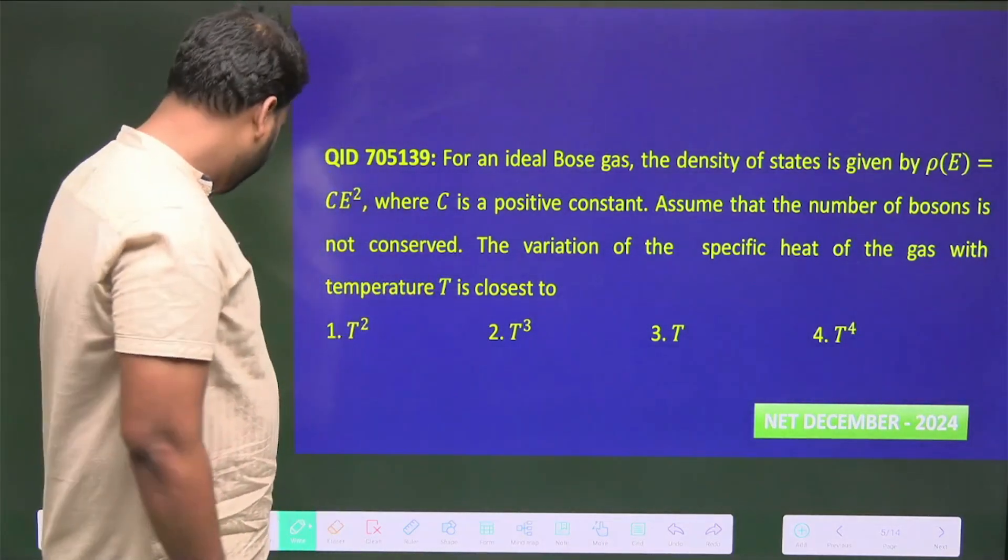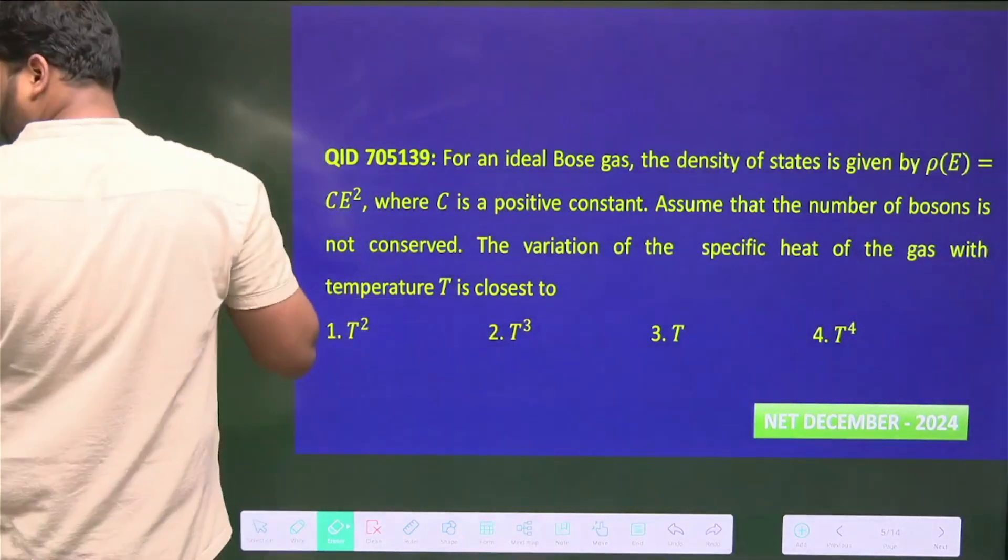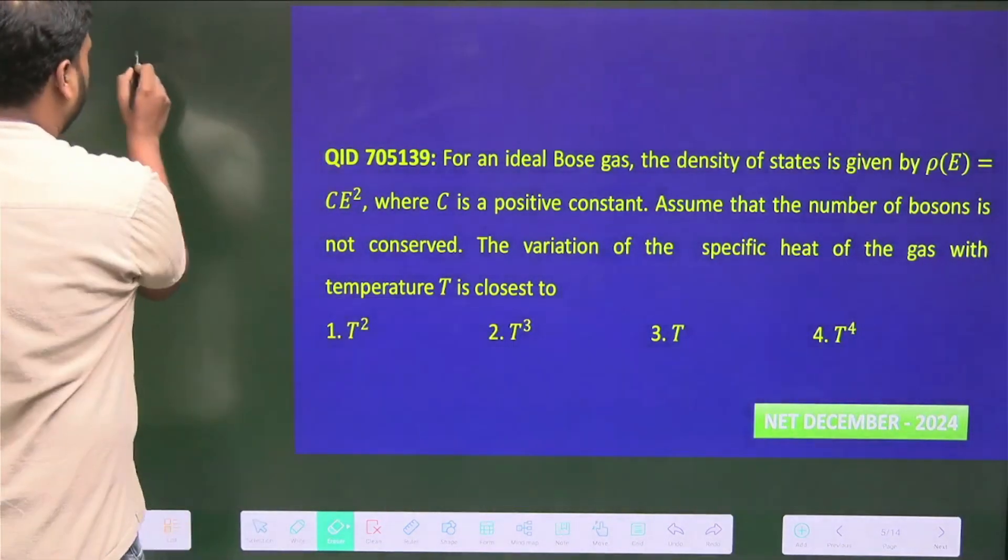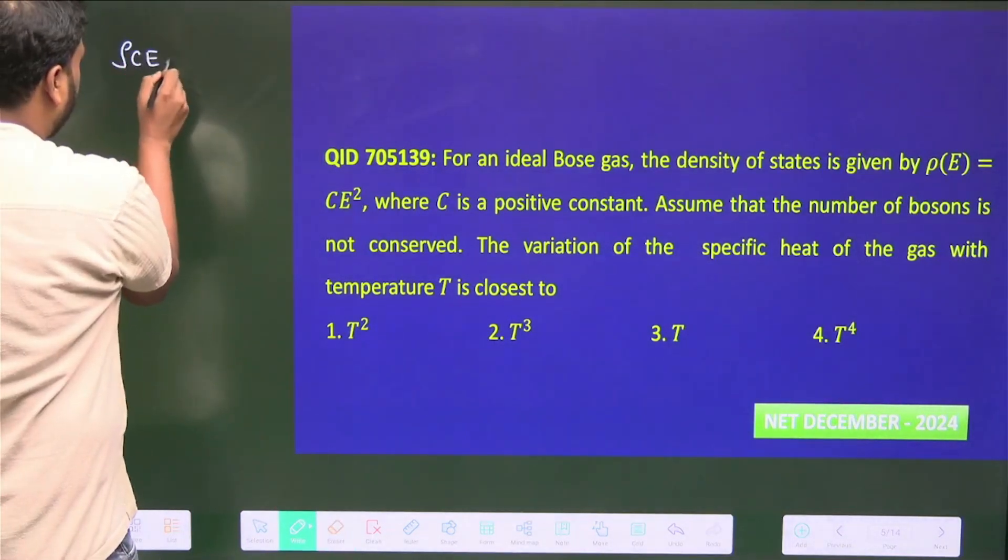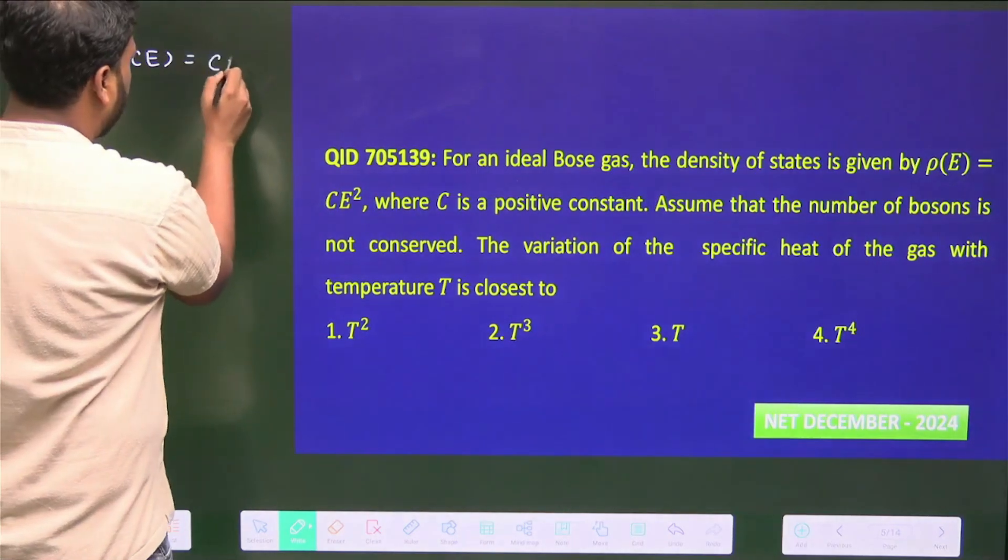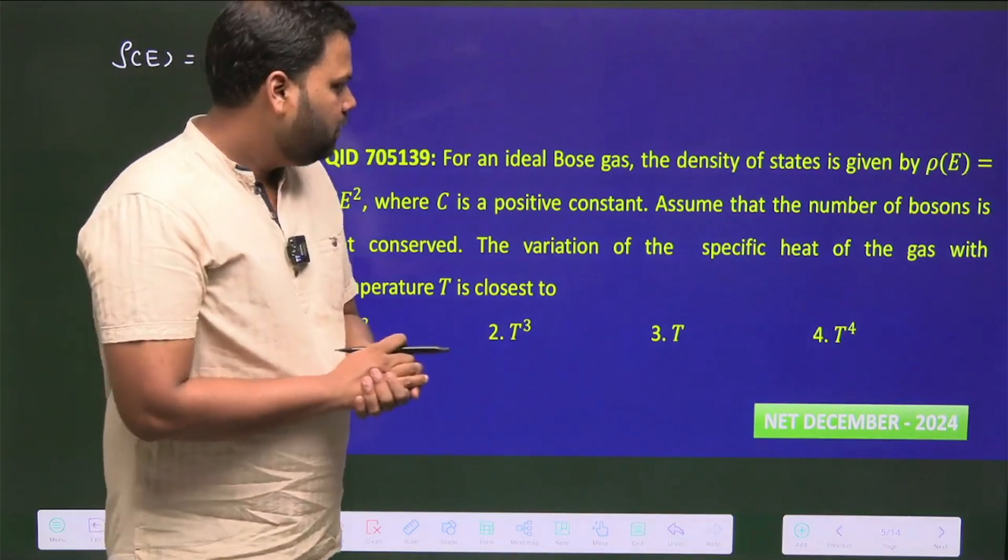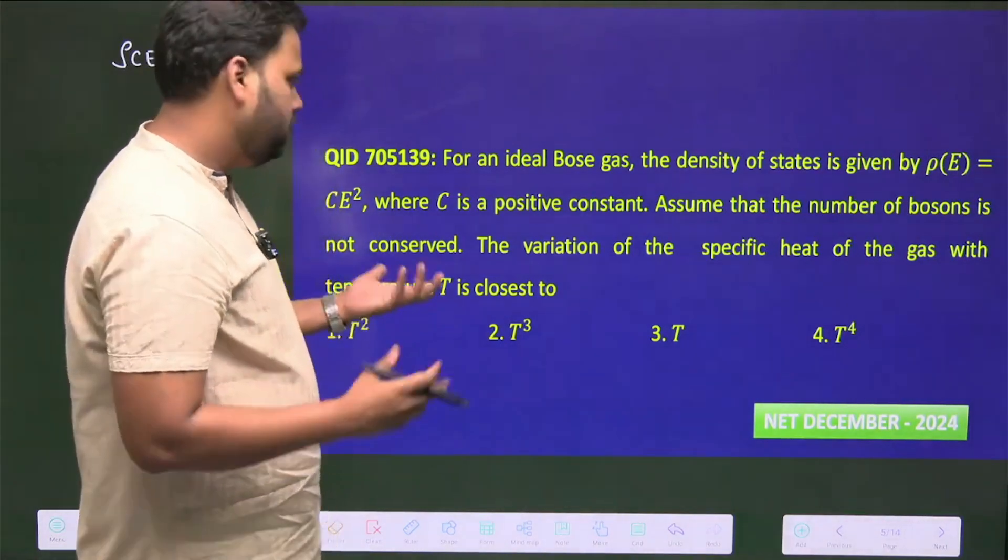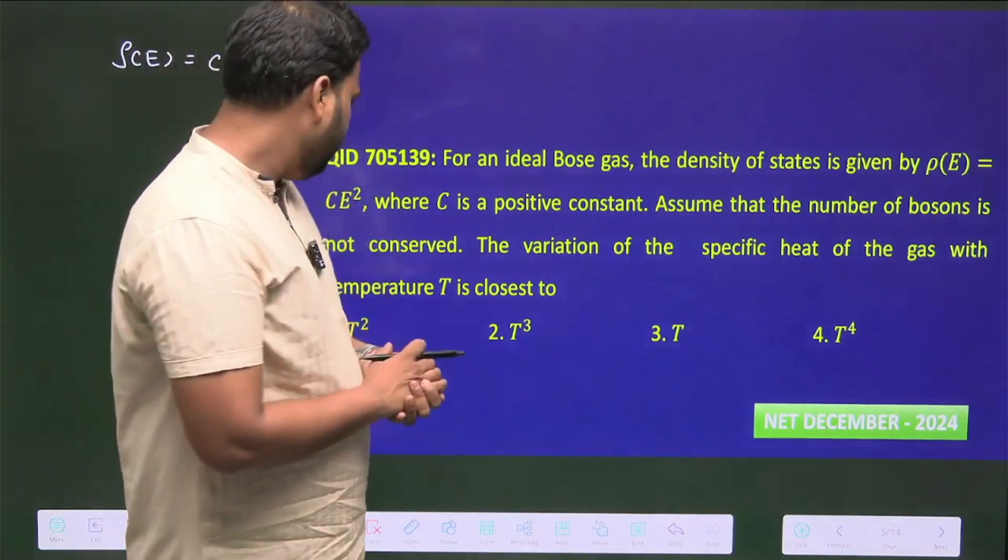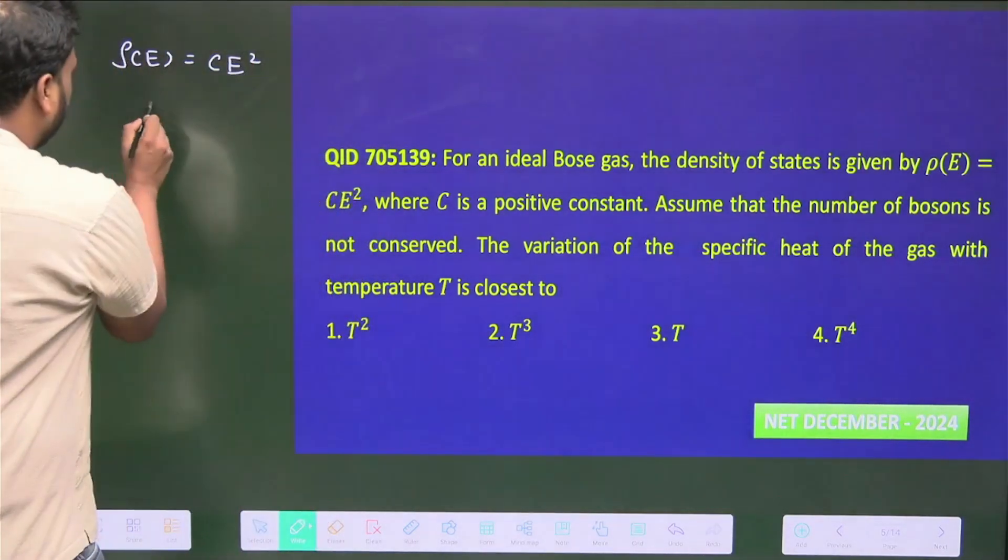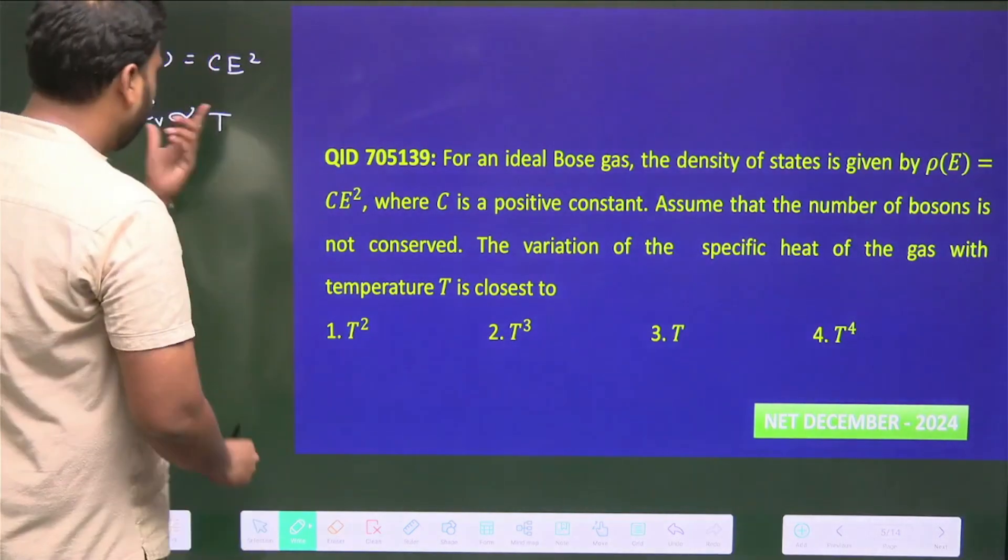The question is: for an ideal Bose gas, the density of states is given by ρ(E) = CE² where C is some positive constant. Assume that the number of bosons is not conserved. The variation of the specific heat of the gas with temperature T...